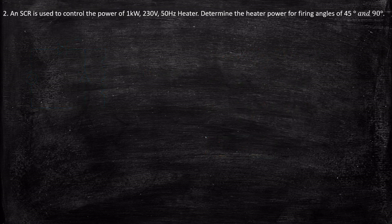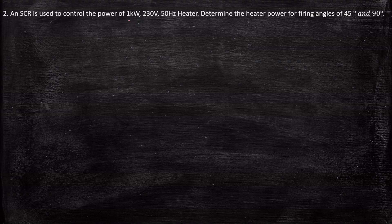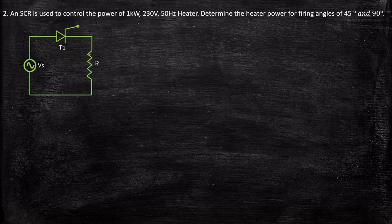Problem number two: an SCR is used to control a power of 1 kilowatt, 230 volt, 50 Hz heater. Determine the heater power for firing angles of 45 degrees and 90 degrees. Only one SCR is used, and the load is a heater — basically a resistive load. So this is a half wave controlled rectifier with R load configuration.